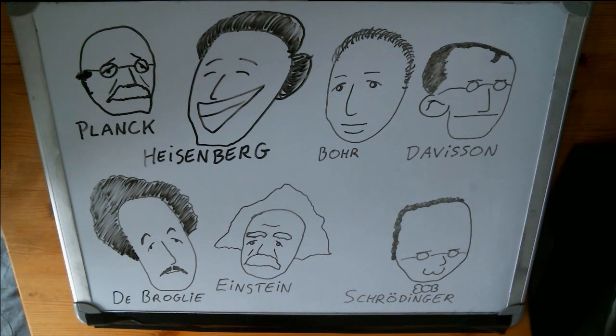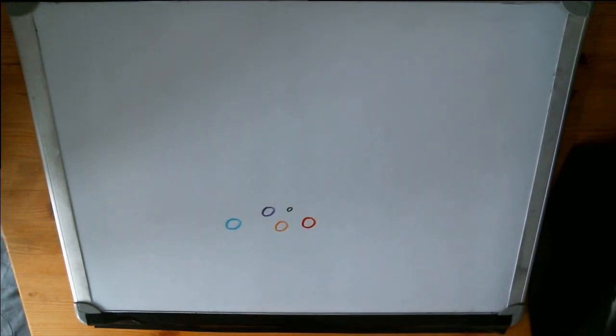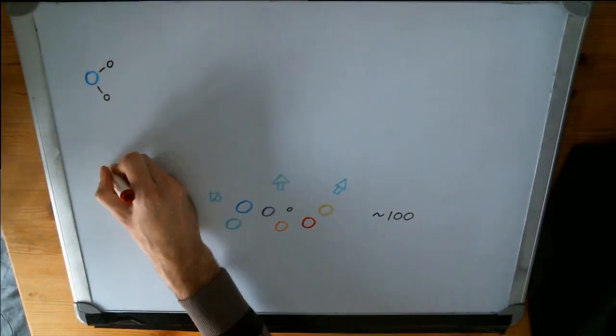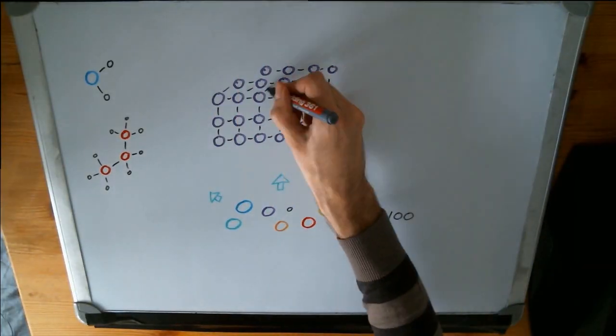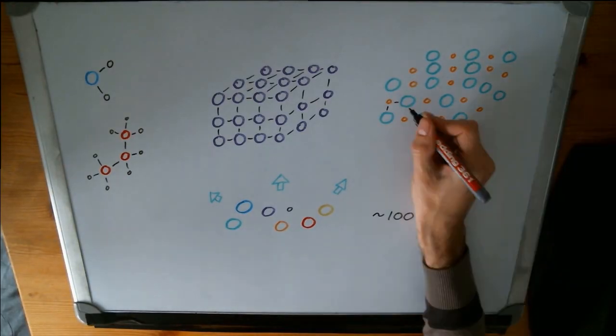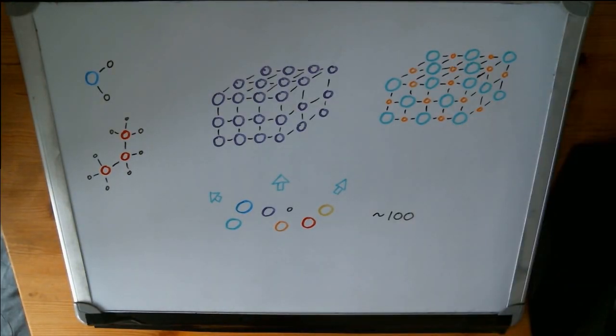These scientists already knew a lot about atoms. For instance, they knew there are about 100 different atoms in nature and that these atoms join in larger structures such as molecules, metal lattices, and salt lattices to make everything we see around us.